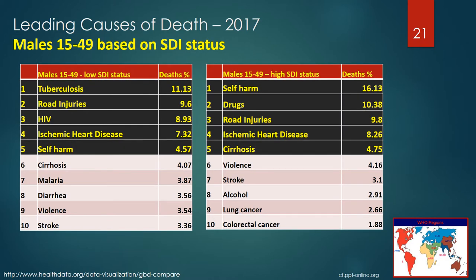These tables look at the global causes of death in males between 15 and 49 years old based on their SDI status. The leading causes of death in low SDI countries were tuberculosis, road injuries, HIV, ischemic heart disease, and self-harm. The leading causes of death in high SDI countries were self-harm, drugs, road injuries, ischemic heart disease, and cirrhosis. As with females, HIV and tuberculosis were among the top 5 causes of death in low SDI countries. Similar to females in high SDI countries, self-harm and drugs lead causes of death. Lung and colorectal cancer were in the 9th and 10th positions for males from high SDI countries, and there were no cancers listed on the top 10 for males from low SDI countries.